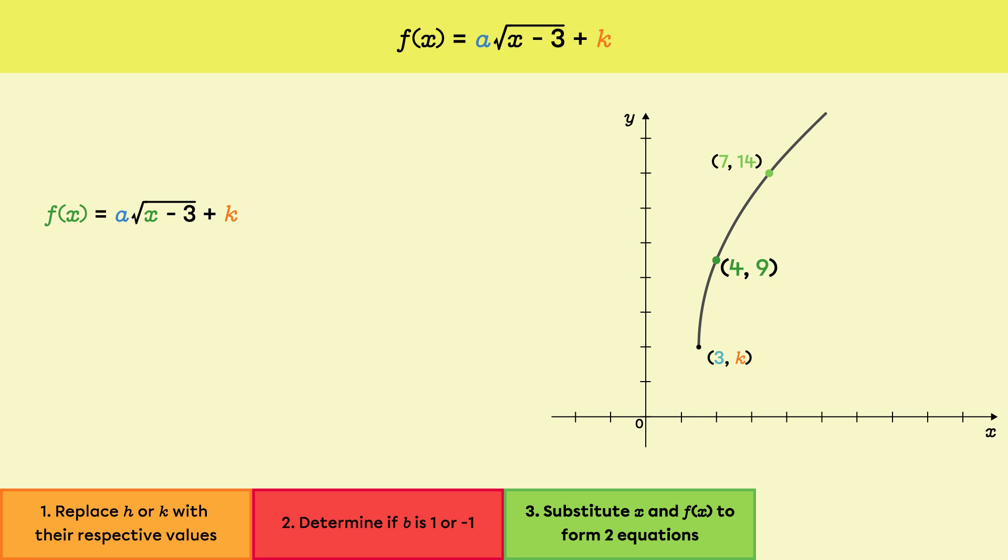We'll start by creating the first equation by replacing x and f of x with the coordinates of the first point. This gives 9 equals a square root of 4 minus 3 plus k. 4 minus 3 is 1 and the square root of 1 is 1, so the first equation becomes 9 equals a plus k.